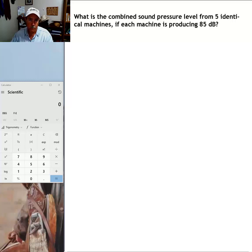And we'll look at that other method in another video tutorial. In this particular tutorial, we're just looking at the method for calculating the combined sound pressure level when each machine is producing the same sound level, the same number of decibels.